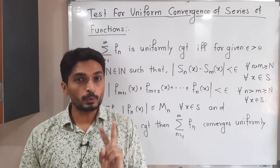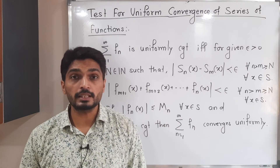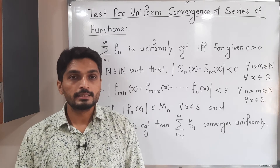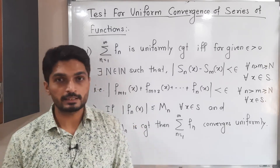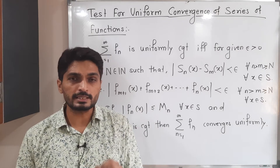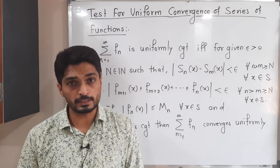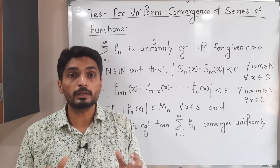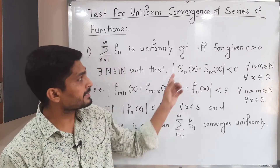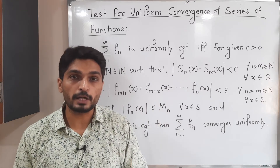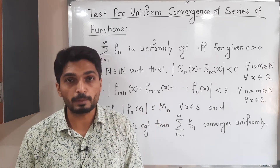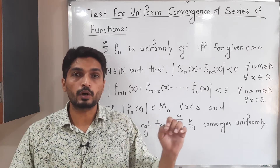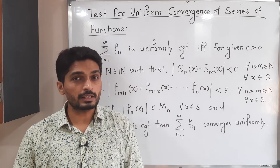Let us discuss two important tests for checking whether a given series of functions is uniformly convergent or not. For the first test, we consider the series ΣFn, a series of functions where each Fn is defined on a non-empty subset S of R. SN denotes the sequence of partial sums, meaning SN = F1 + F2 + ... + FN.